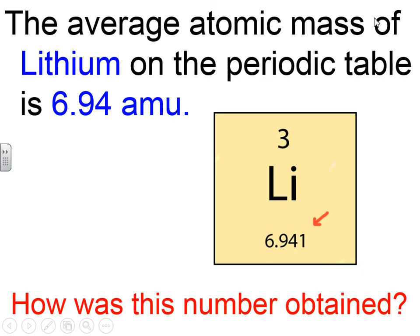If you take a look at lithium on the periodic table, the average atomic mass of lithium is 6.941 AMU. The question is, how did we get this number from all the data?